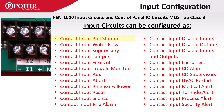The options available are: Contact Input Pull Station, Water Flow, Supervisory, Tamper, Contact Input Fire Drill — a point type used with a remote switch that initiates a fire drill — Trouble Monitor, and Contact Input Aux, a legacy point type that initiates a fire alarm condition.